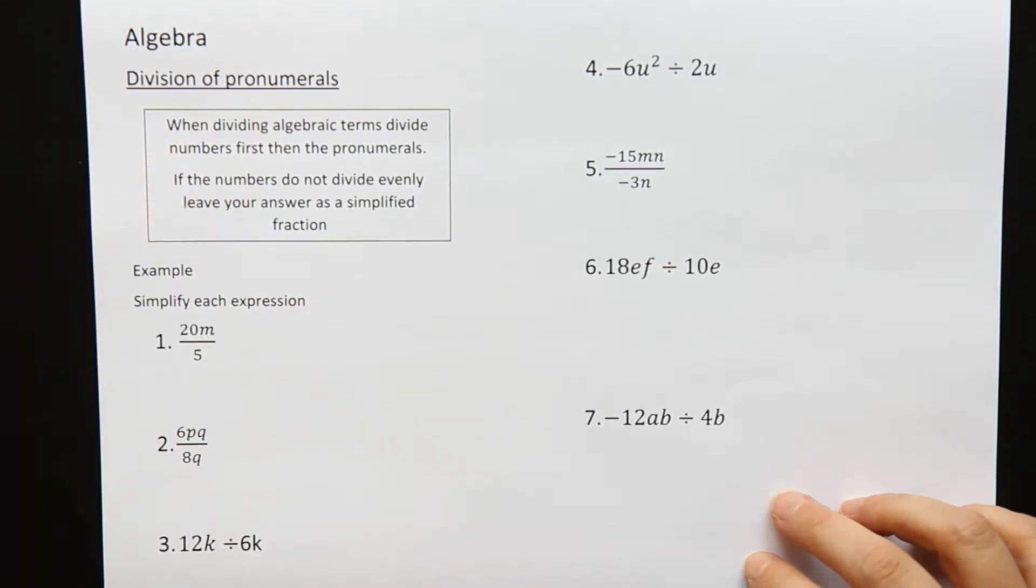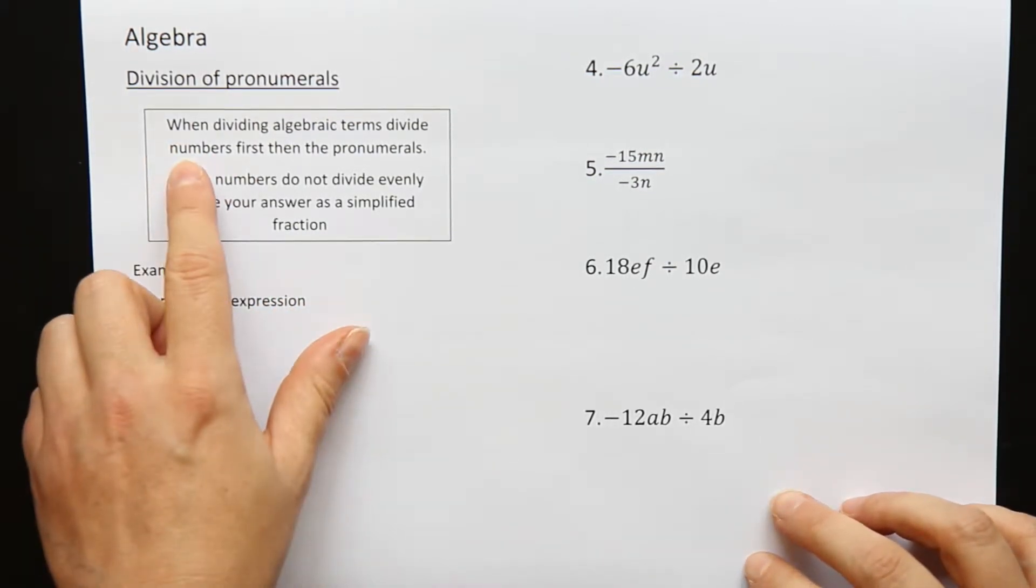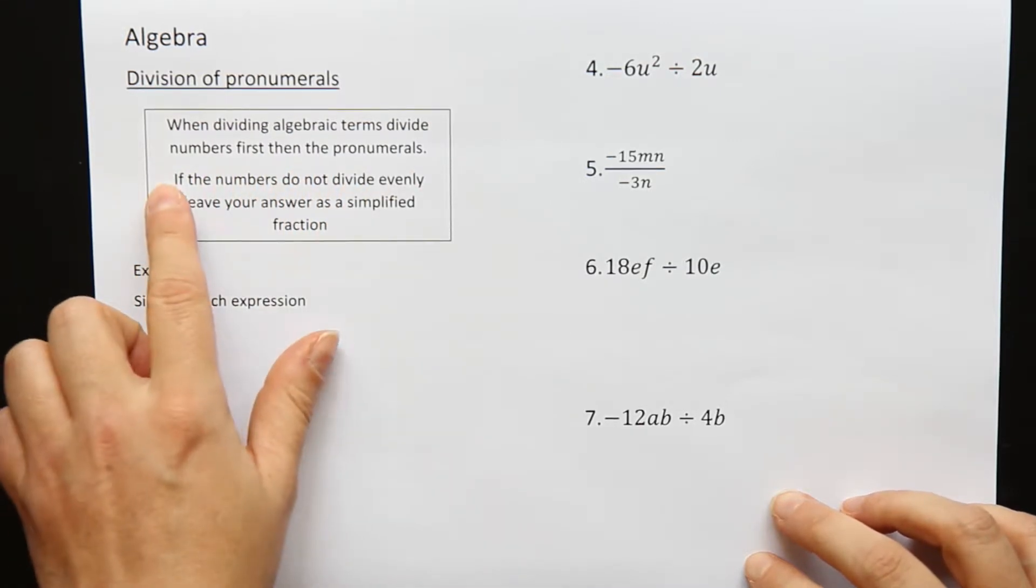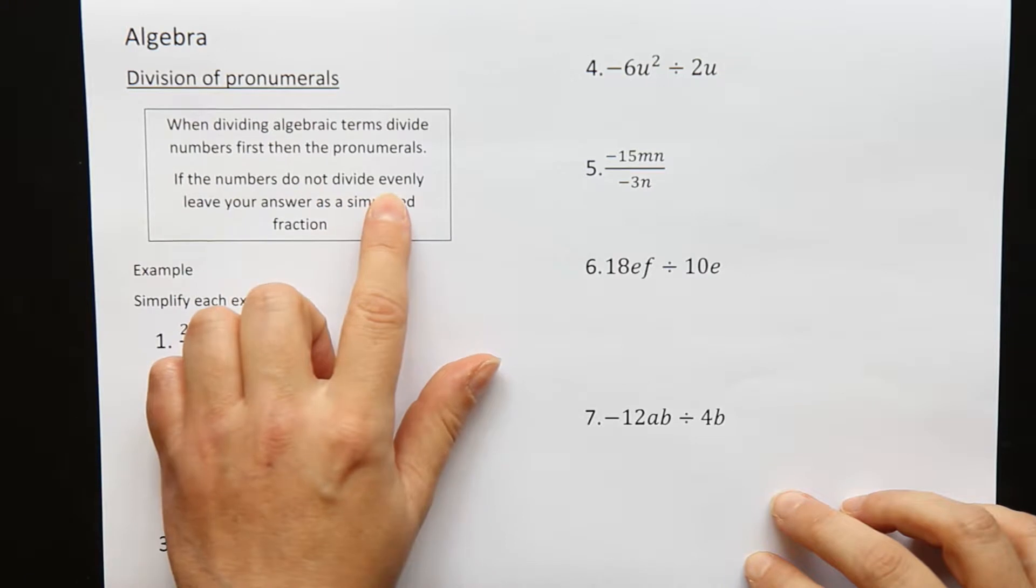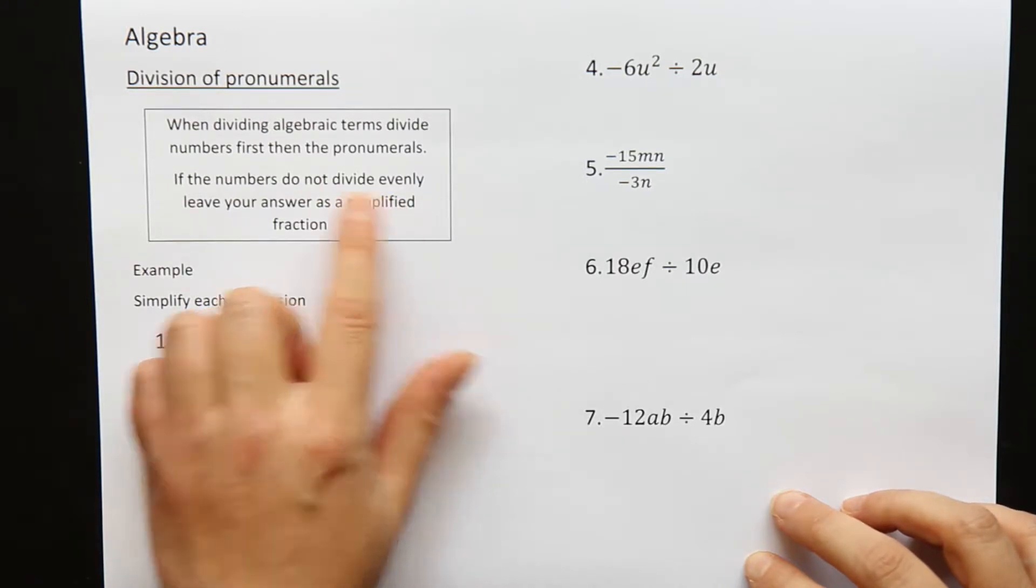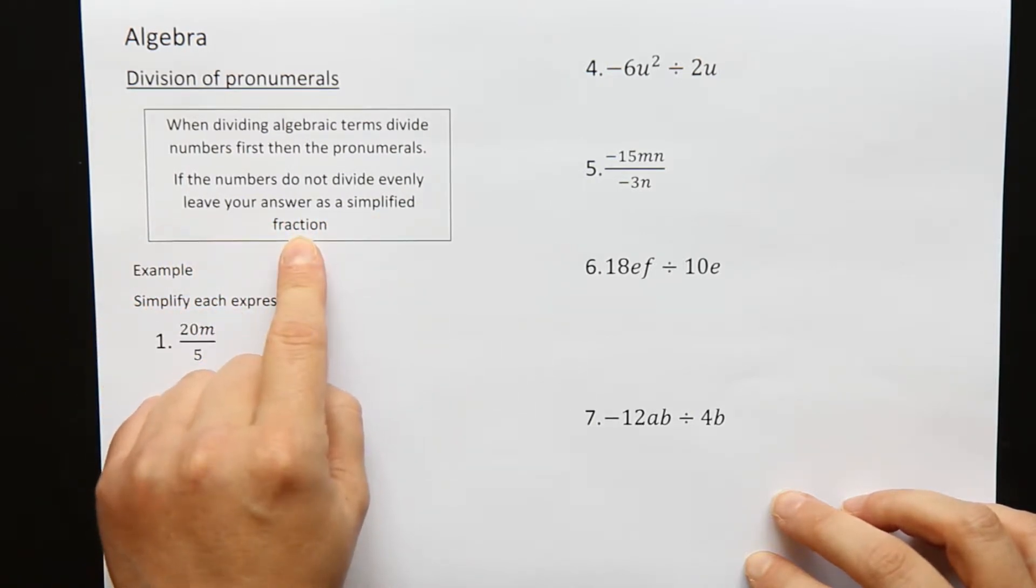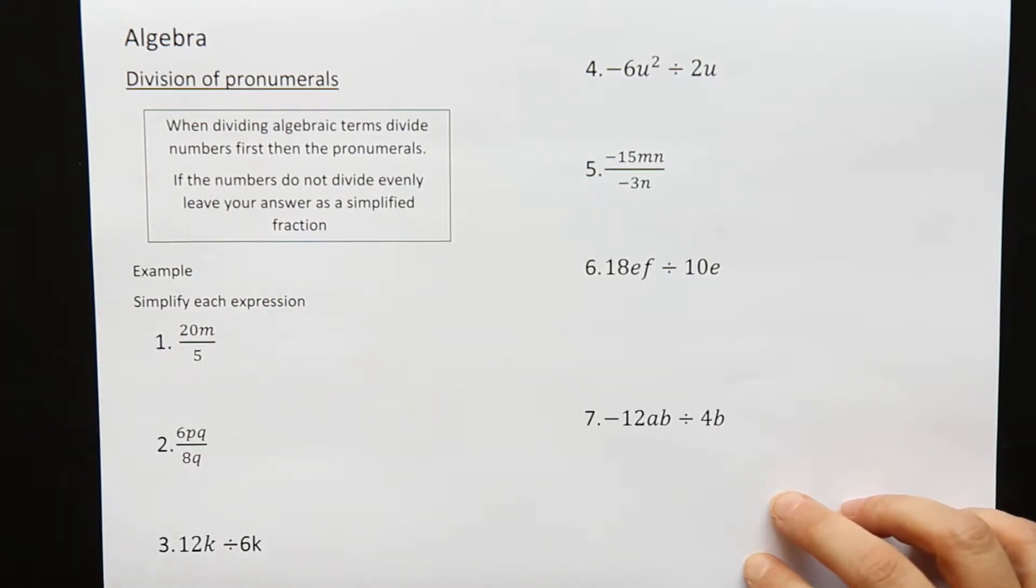When dividing algebraic terms, divide the numbers first and then the pronumerals. If the numbers do not divide evenly, so you divide them and you get a decimal or an improper fraction, then you need to leave your answer as a simplified fraction. Don't ever go to decimals.